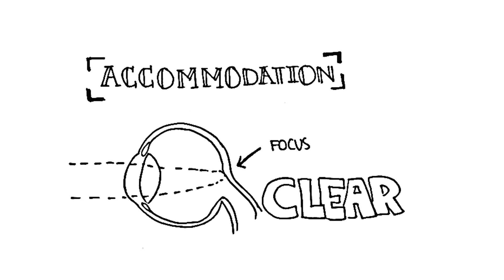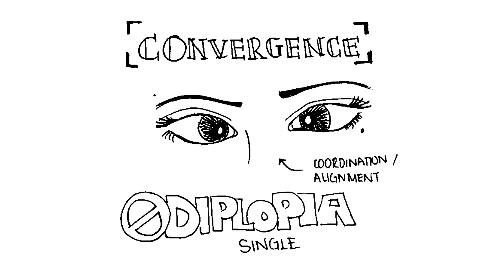Before we start, I want to clarify two terms: accommodation and convergence. Accommodation is the focusing of the eye — this is what allows us to see clearly. Then you have convergence, which is the posture and alignment — where are the eyes sitting? Is it out? Is it in? This is what allows us to see single and not double.